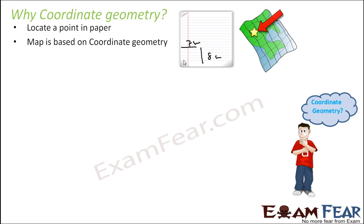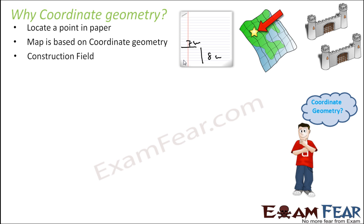The map system — latitude and longitude — is all about locating points. You locate your city and your streets on a map. In the construction field, coordinate geometry is used a lot because engineers need to find the relative position of one point with respect to others.